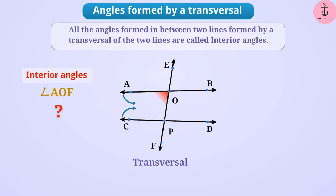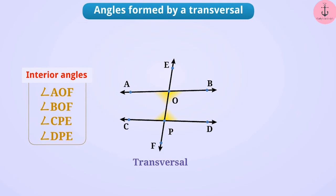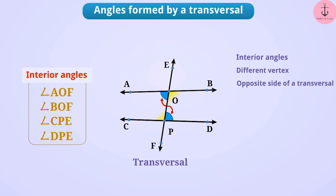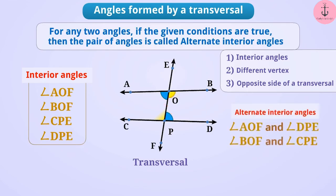Consider angle AOF and angle DPE: they are interior angles with different vertices and are on opposite sides of the transversal — such a pair is called alternate interior angles. Angle BOF and angle CPE are another pair of alternate interior angles. Now consider angle AOE: it is outside both lines AB and CD, so it is an exterior angle.